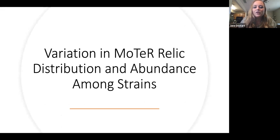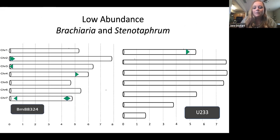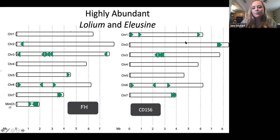And then to determine whether these matches were true relics and not just aberrant matches in the genome, I then blasted those FASTA files against MoTeR sequences. And then once I found what my true relics were, I then blasted those against the genome to find their position. So for my first bit of results, I first looked at the variation of MoTeR relic distribution and abundance among the various strains. And I'm just going to show a few examples here. These were some strains where there was a very low abundance of MoTeR relics. Here on the left, we can see BM88324, which is from Brachiaria, had only seven relics. And U233 had the least amount of relics in all of the strains where it only had one showing up.